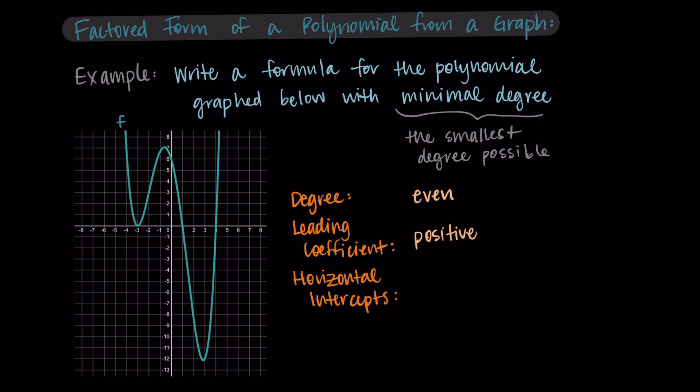Then I can also see the horizontal intercepts. I have those at x equals negative three, x equals one, and x equals four. Talking about the multiplicity of these intercepts is going to help us out.